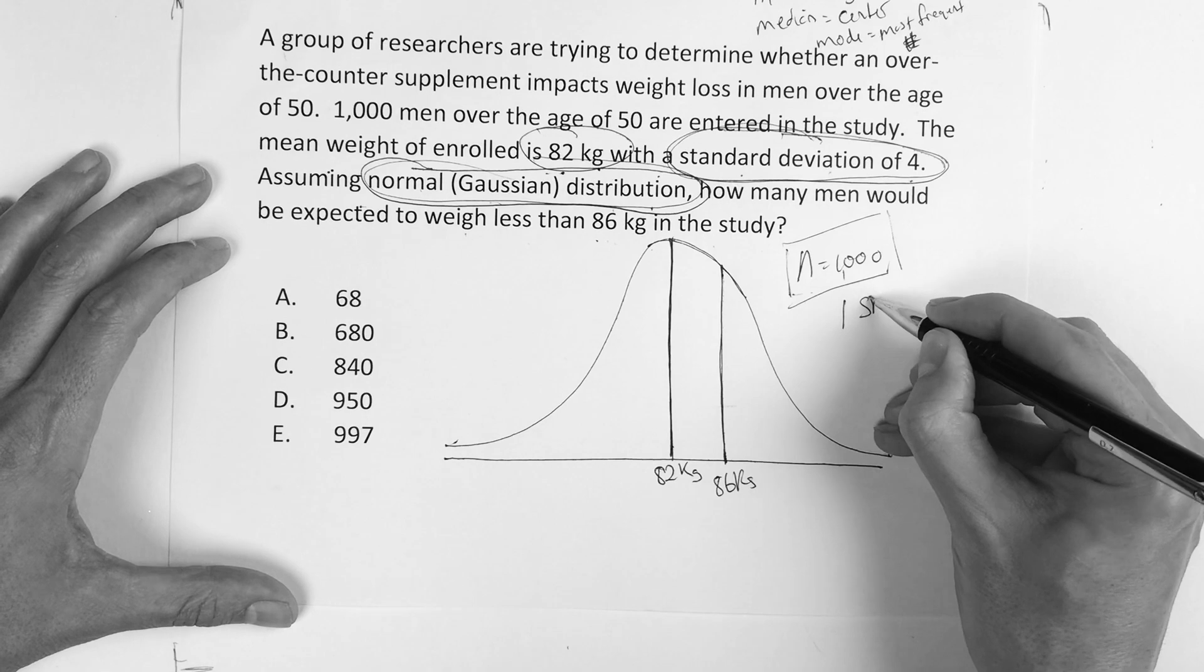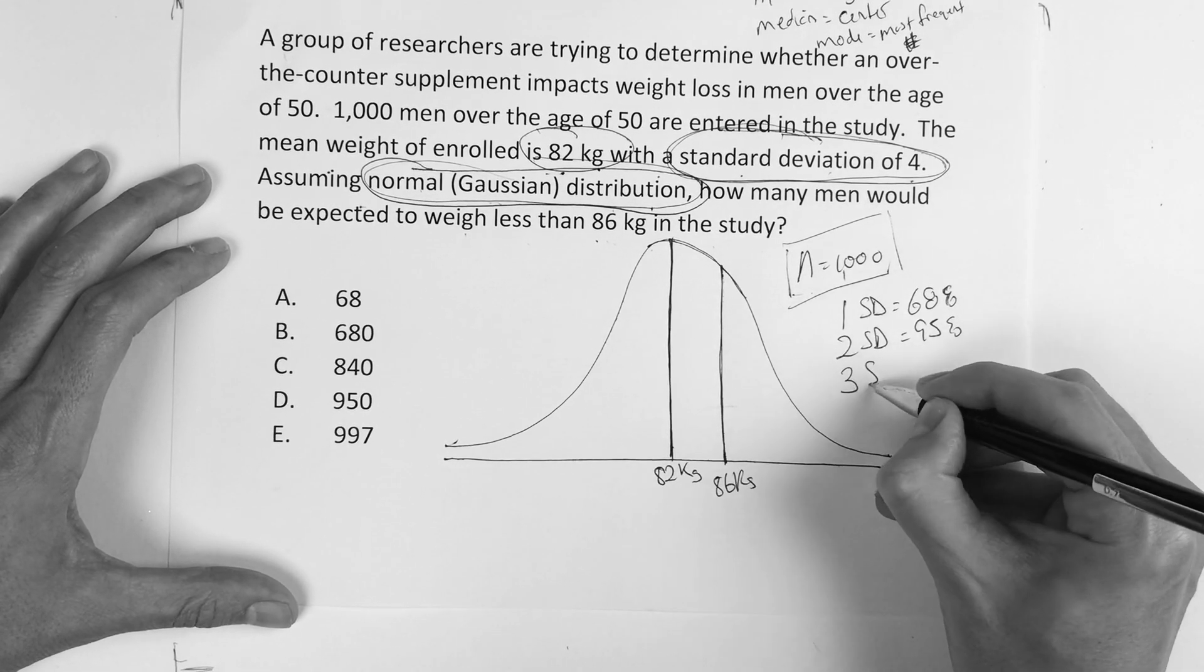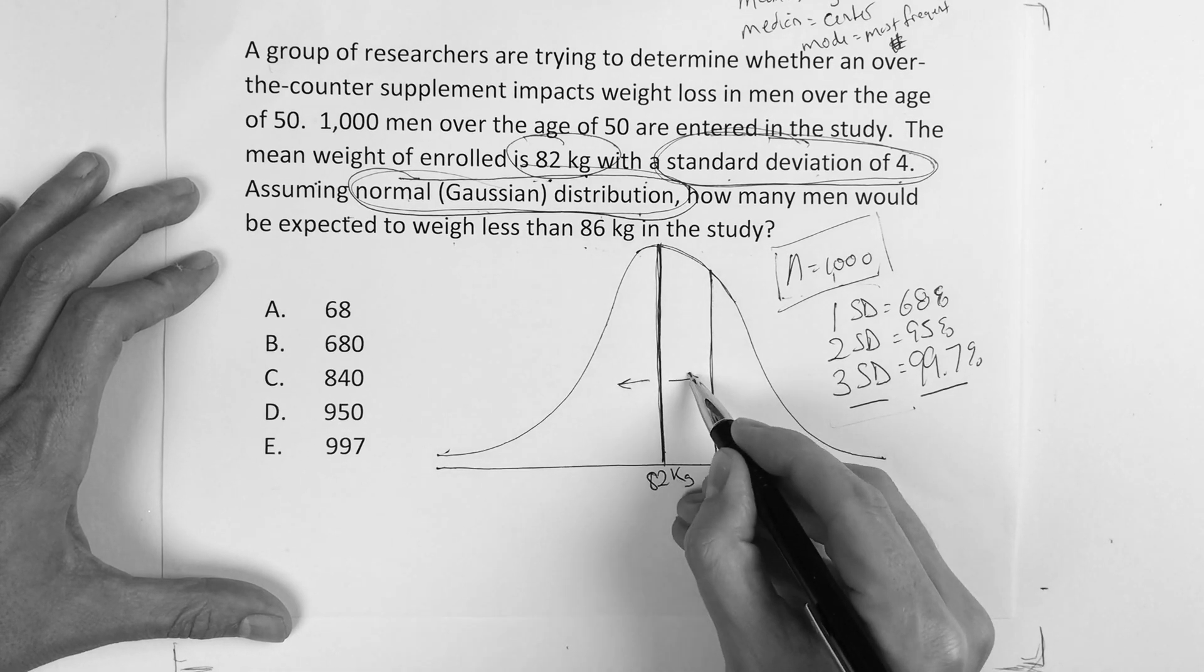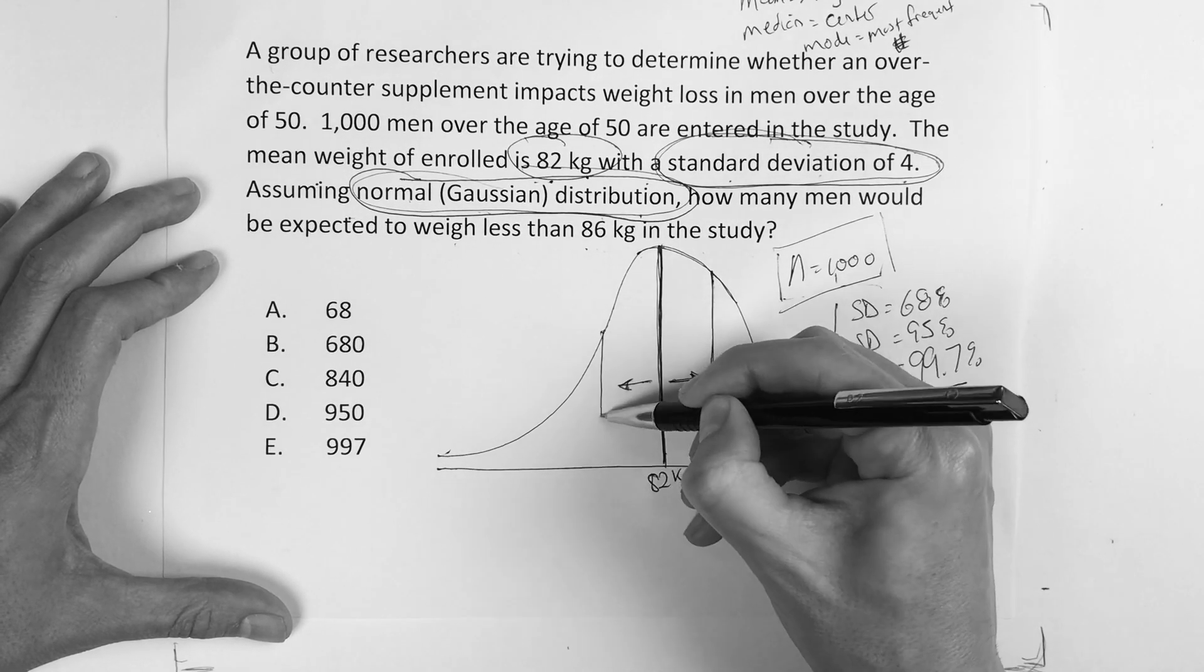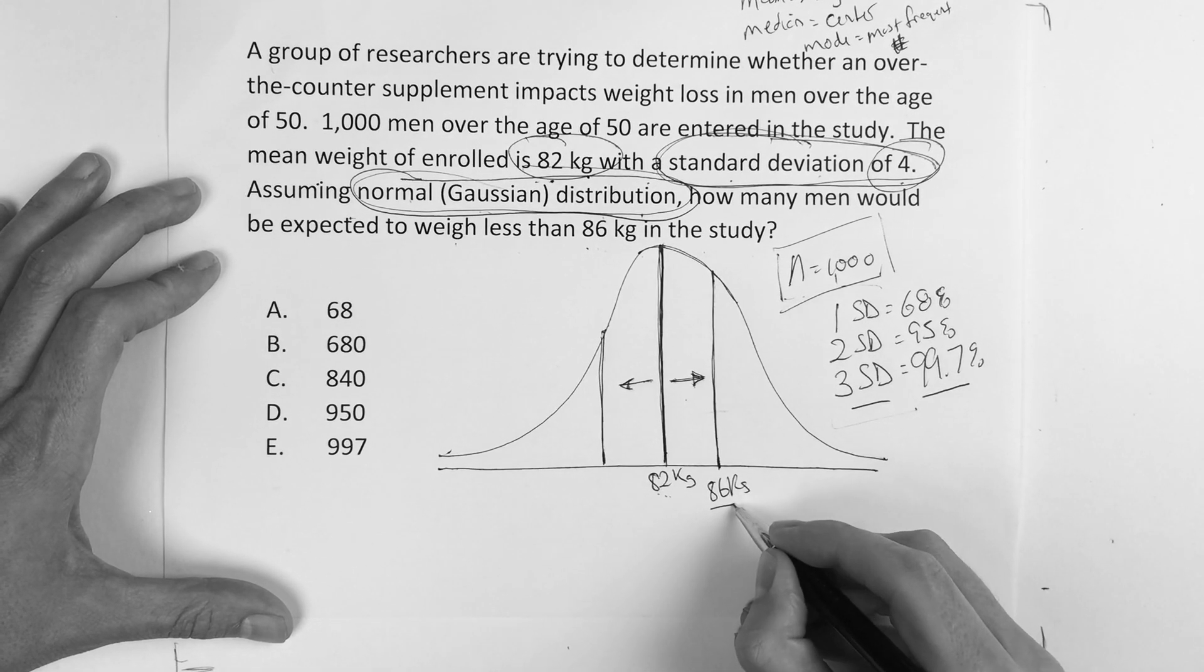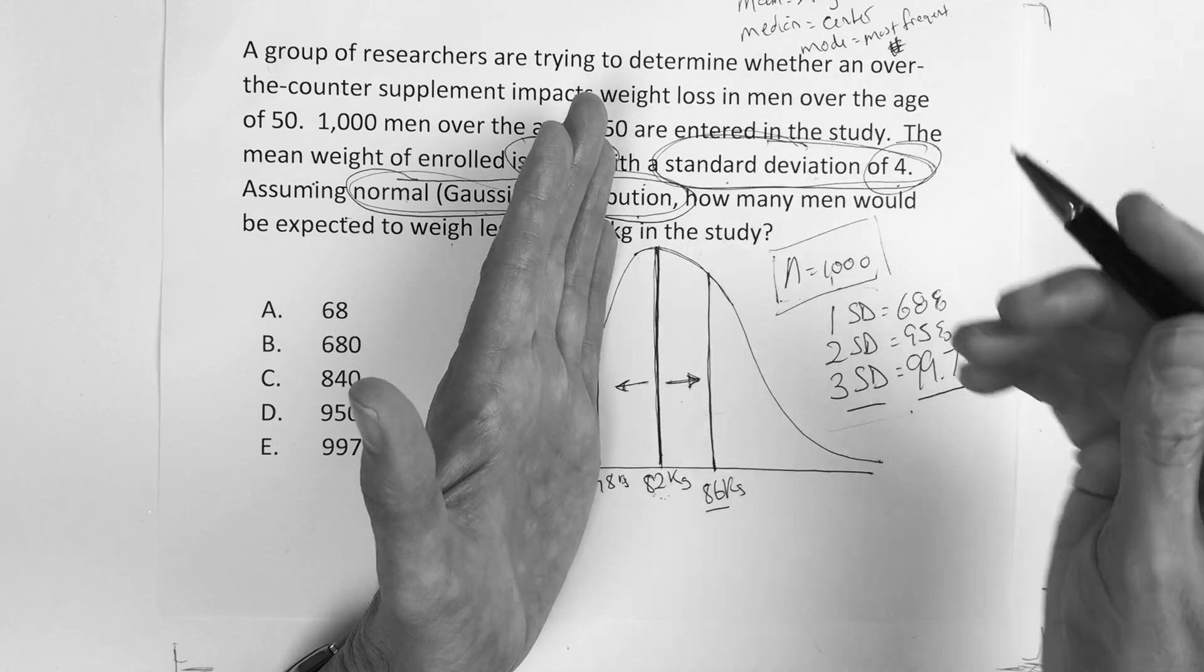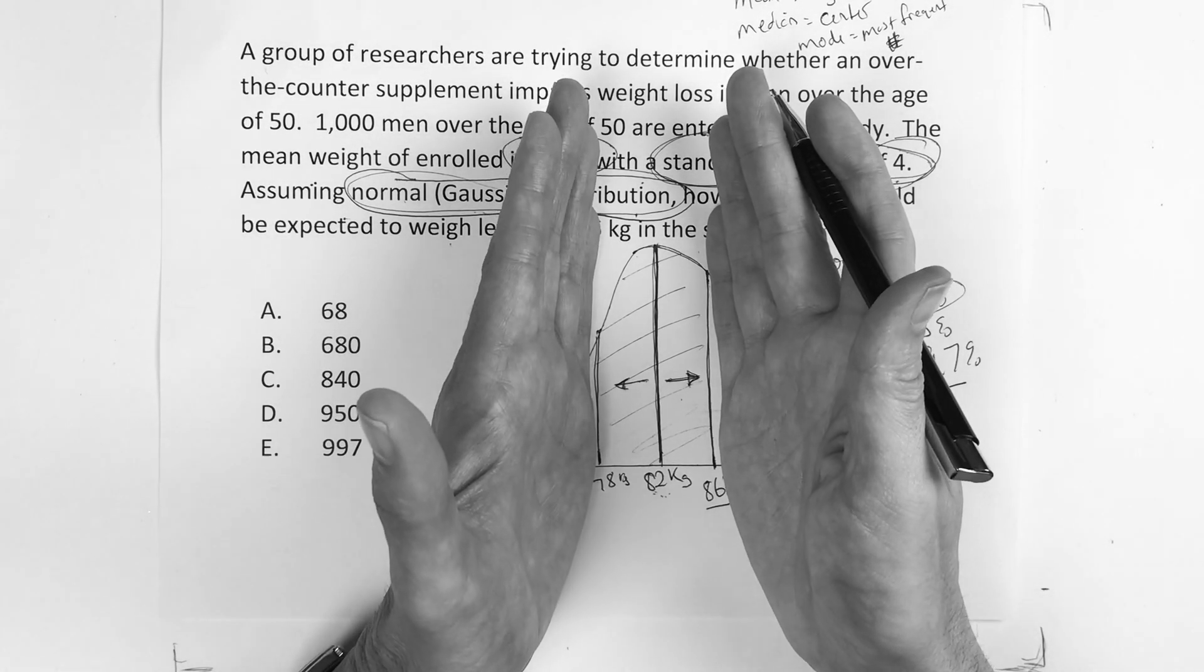What you have to have memorized is: one standard deviation 68%, two standard deviations 95%, three standard deviations will contain 99.7% of the population. A standard deviation really means: if here's the center, how far from the center does it go. If you go out one standard deviation in both directions, and one standard deviation in this study is 4, so if I go from 82 plus 4, it would give me 86. 82 minus 4 is going to give me 78. So really between 78 and 86, I have 68% because one standard deviation should contain 68% of all the people.